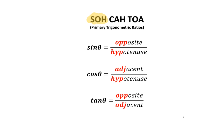The SOH in SOH-CAH-TOA helps us remember the sine ratio. The CAH helps us remember the cosine ratio. And the TOA helps us remember the tangent ratio.